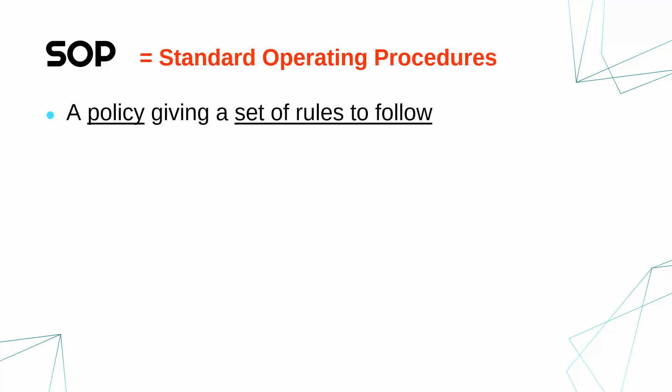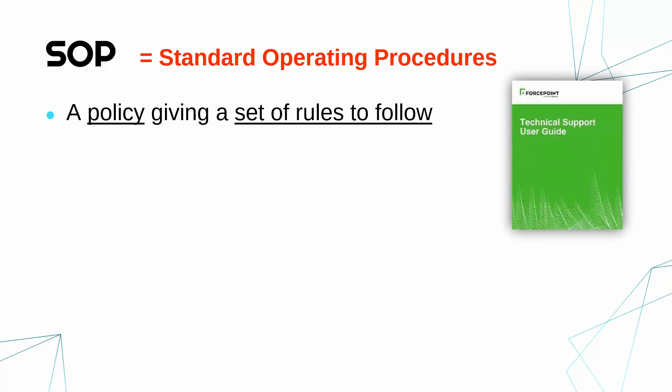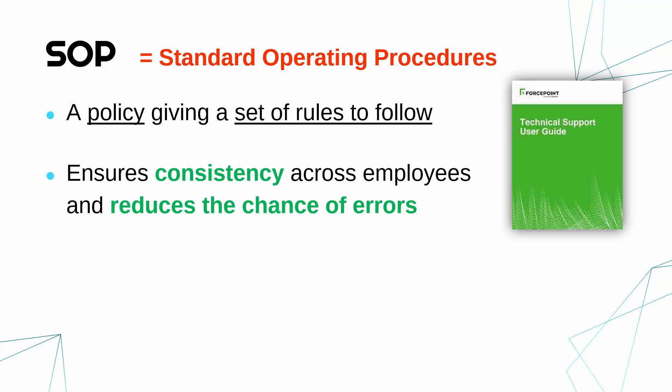The second version of SOP is completely separate. It can stand for Standard Operating Procedures. These are not very fun, but they are quite important. Standard operating procedures are policies giving a set of rules to follow to do particular jobs. You might have a SOP for fixing an iPhone, a SOP for installing Linux, or a SOP for upgrading the mainframe — the sort of task which has quite a lot of steps involved and things could go wrong. These are usually for fairly regular processes, and the idea is to ensure consistency across employees, reducing the risk of somebody making a mistake, not quite understanding, or skipping a step.